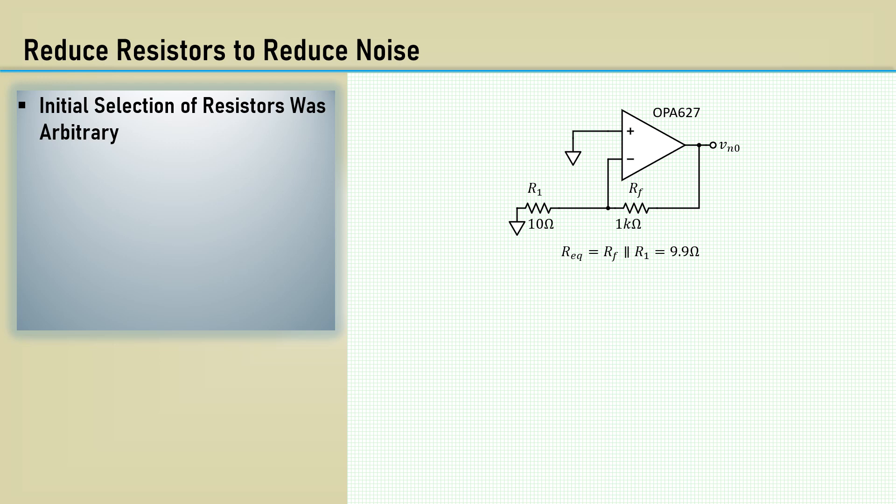If you are using the inverting configuration, R1 will set the input impedance, which is a challenge. Most low-noise applications are the first-in-the-chain amplifier for a sensor or transducer. It's usually best to use the non-inverting configuration to take advantage of the high input impedance.